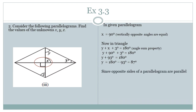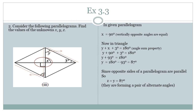Since opposite sides of a parallelogram are parallel, focus on the Z formation — when Z formation occurs we get alternate angles. Z and Y are a pair of alternate angles, so Z equals Y, which is 87 degrees. So angle X = 90°, and both Y and Z equal 87 degrees.